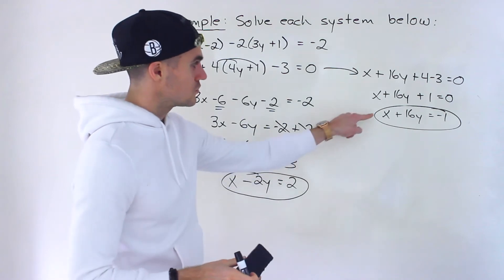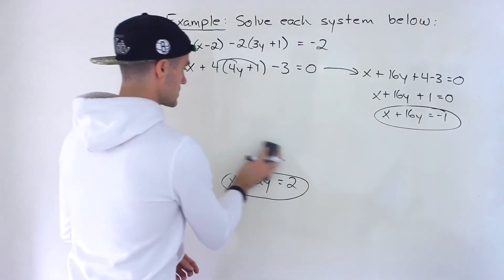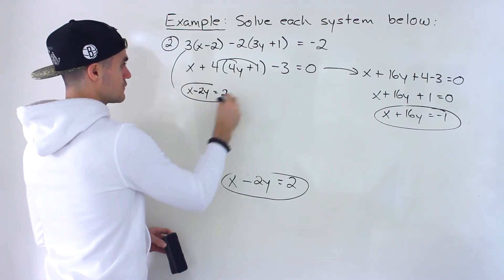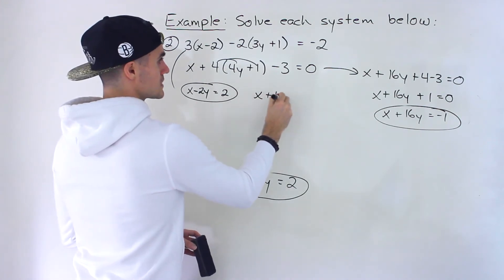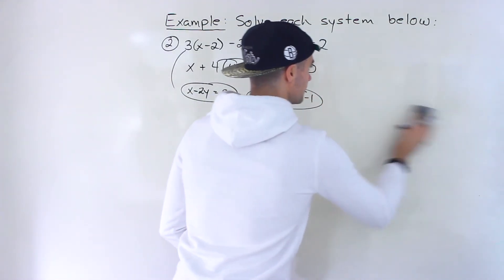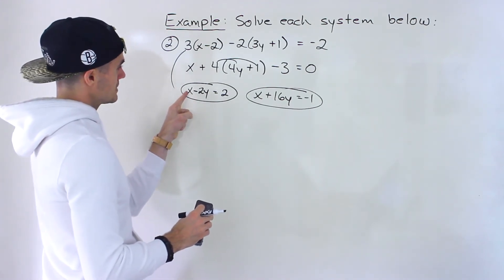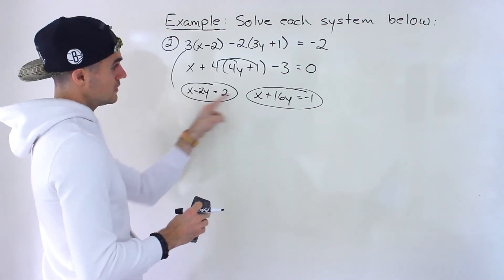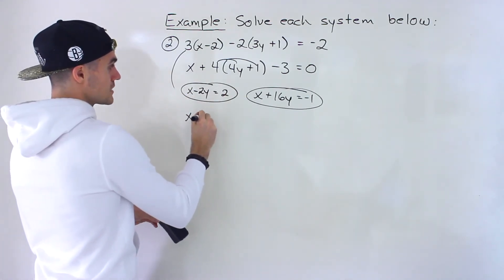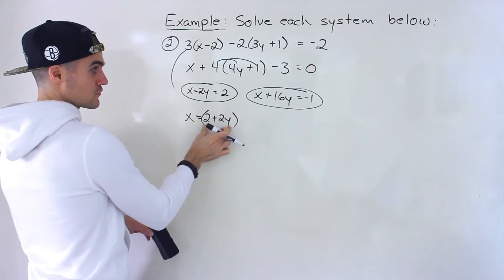Now we work with these two equations to solve for x and y — much nicer to work with. I'm going to do substitution and isolate for x in the first equation. Bringing the negative 2y over, it becomes positive, so x equals 2 plus 2y. Then I'll plug this expression for x into the second equation.